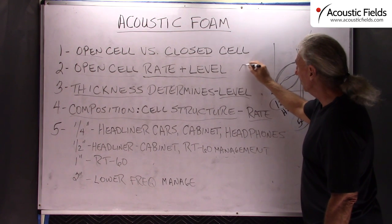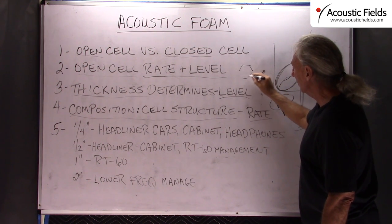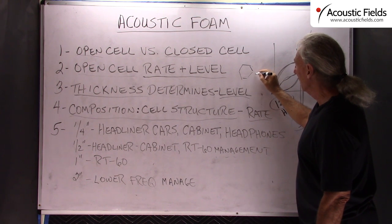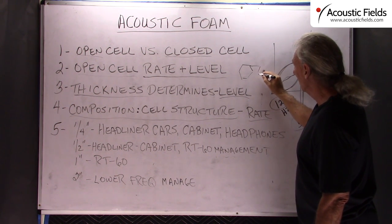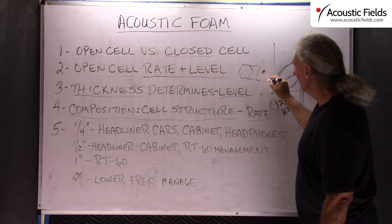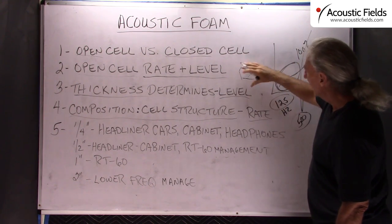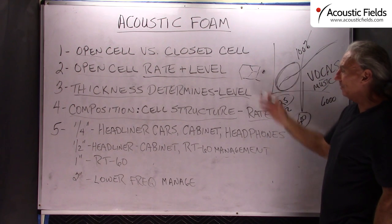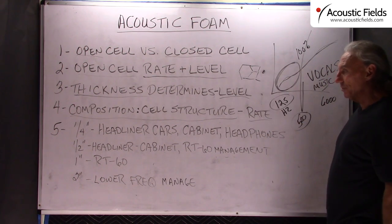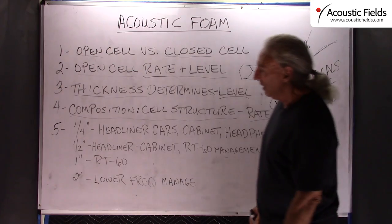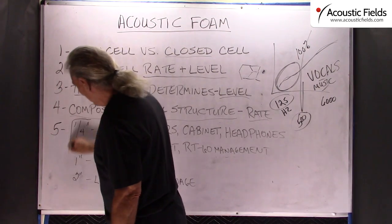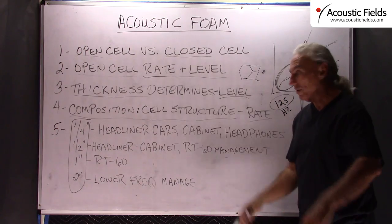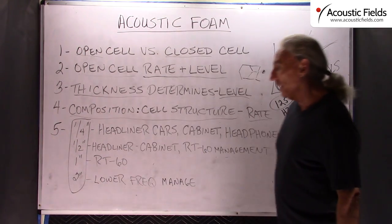Our cell structure is very unique — it's more like a honeycomb structure. All the cells fit together and you get a nice composition where everything works together. All the cells are pretty consistent in shape and form. So level and rate are the two things you look for, and since thickness controls the level or how low it goes, we manufacture four types.